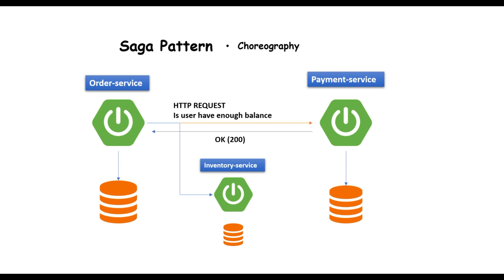To overcome this issue, microservices developers introduced the Saga pattern. We can implement this Saga pattern with two approaches: the choreography approach and the orchestration approach. In this tutorial we'll be discussing the choreography-based approach using event sourcing, so there will be no HTTP request calls — we'll go with the event sourcing approach with choreography.